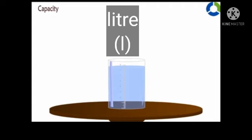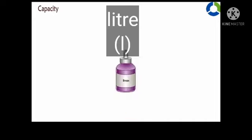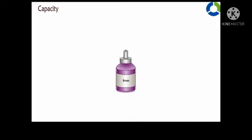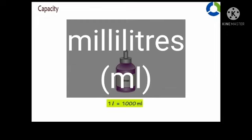So what is the unit of capacity? Yes, the unit of capacity is liter. L-I-T-R-E. In short way, we can write it as L. The smallest unit of capacity is milliliter. So 1 liter is equal to 1000 milliliter.